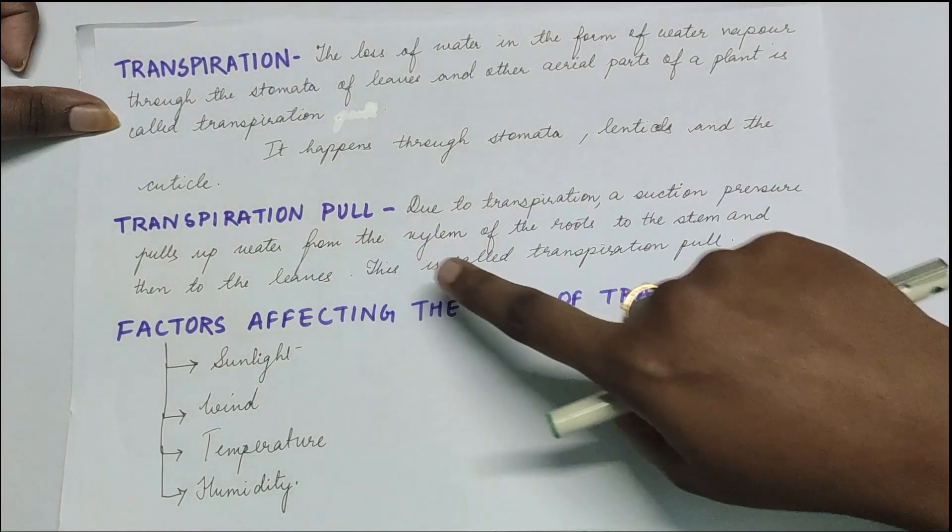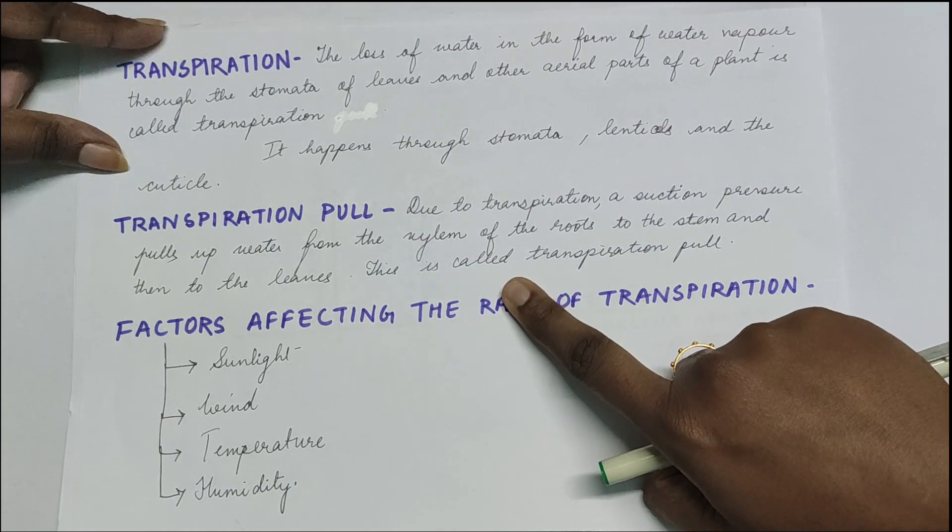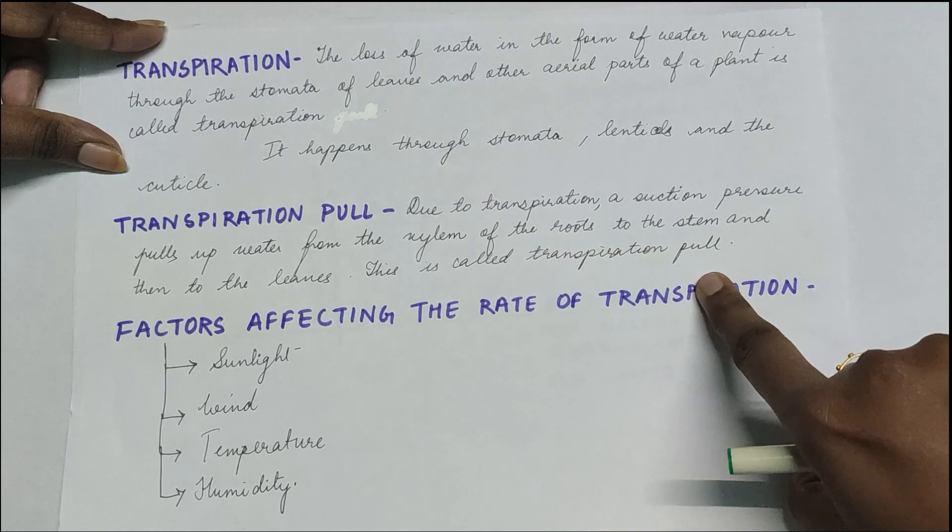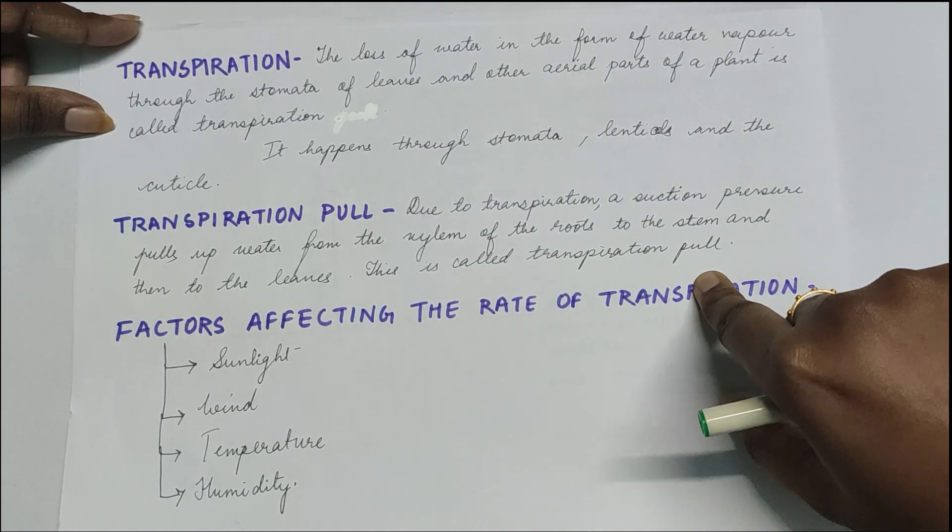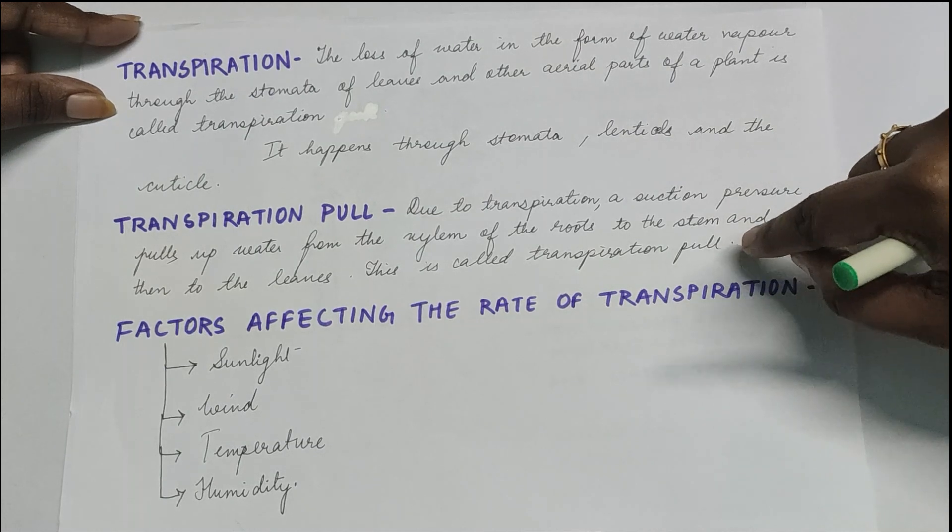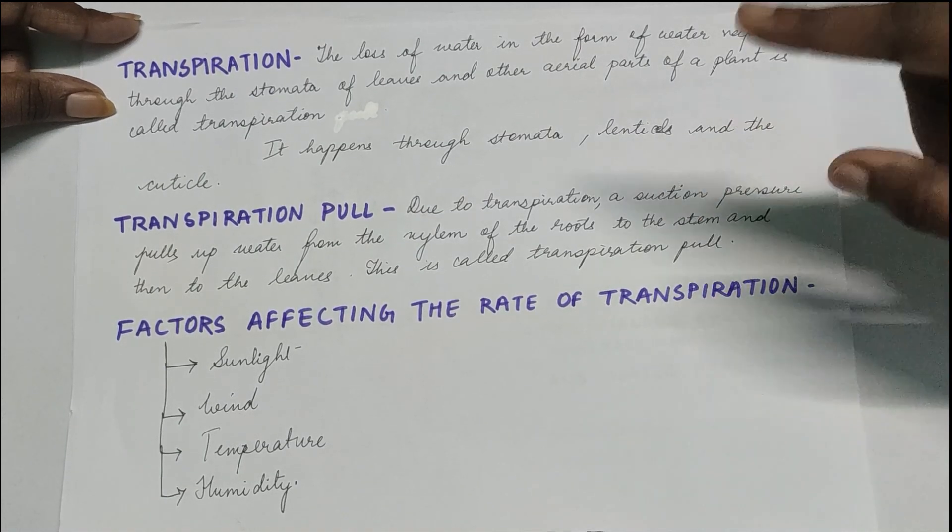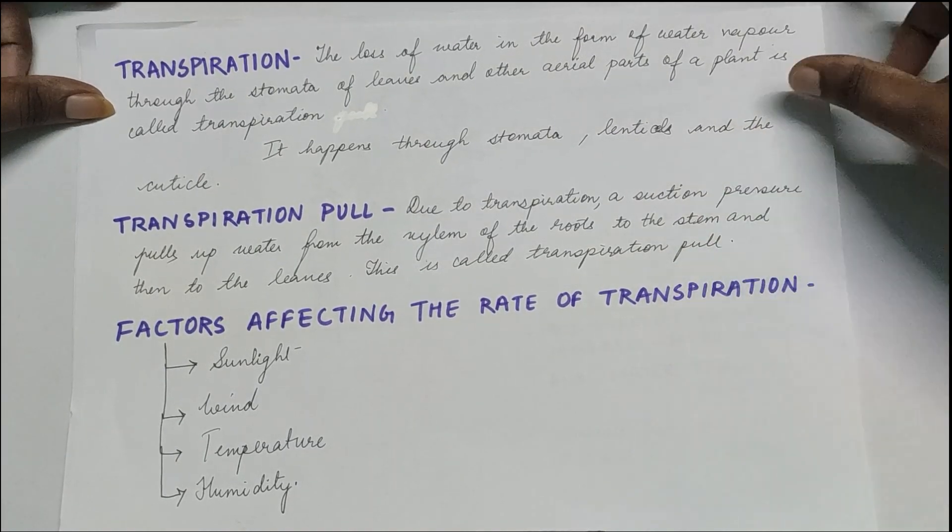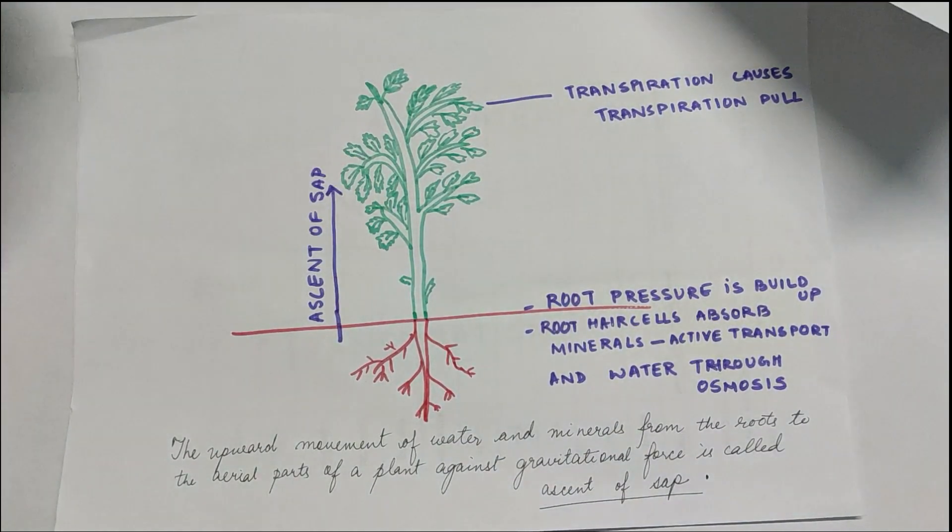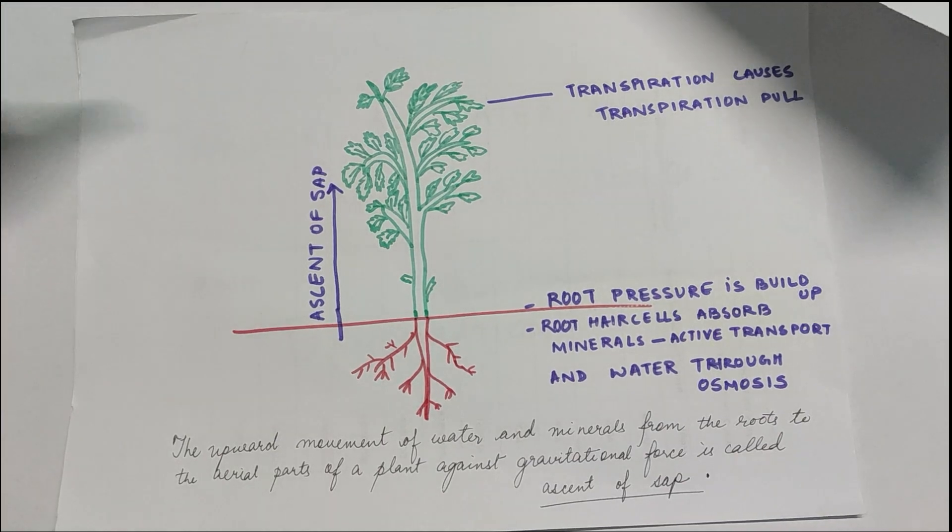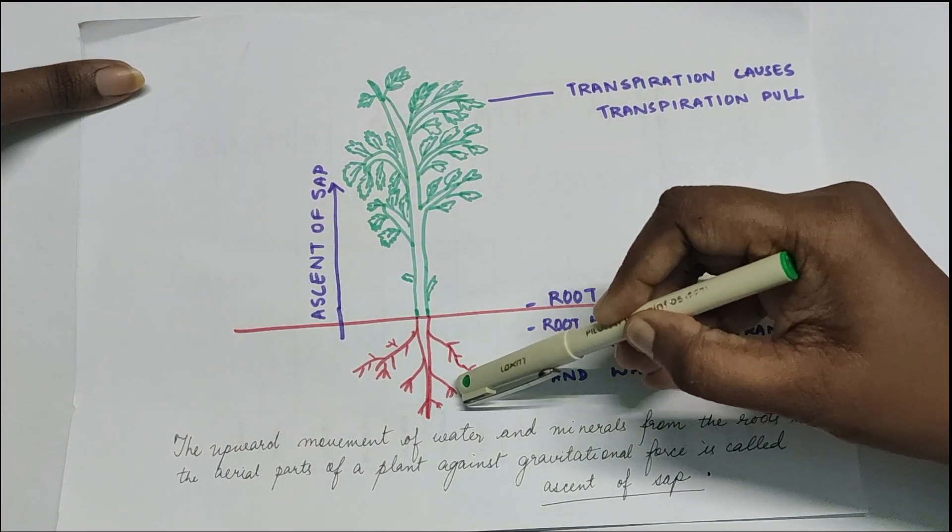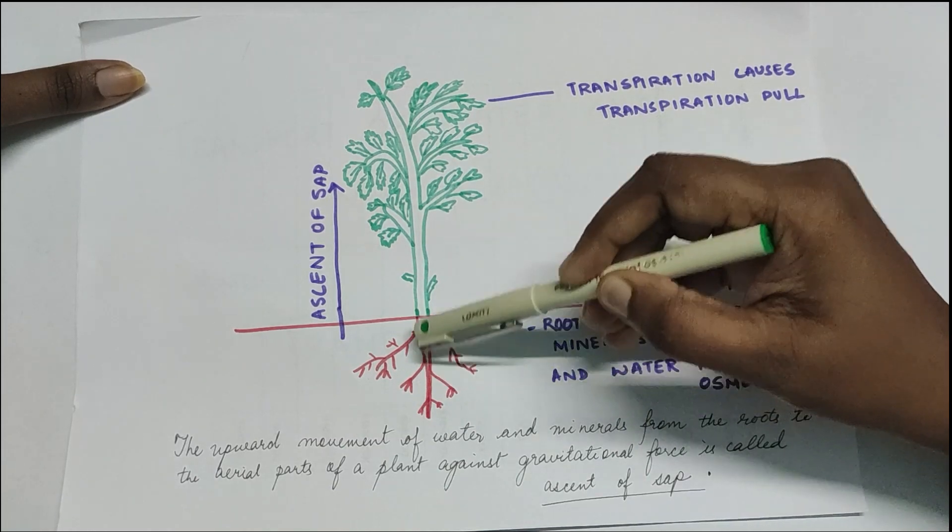This process is called the transpiration pull. Now to talk about transpiration pull and the relationship of absorption of water, as I had shown you in the previous diagram, absorption has a direct relationship with transpiration.